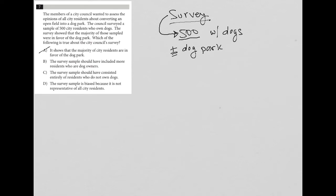Choice B says the survey sample should have included more residents who are dog owners. Well, that's also not true because all of those who were surveyed were already dog owners. So there's no indication here that we needed to speak to even more dog owners.